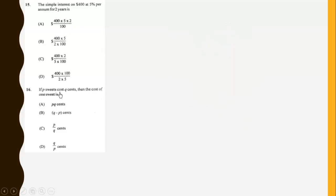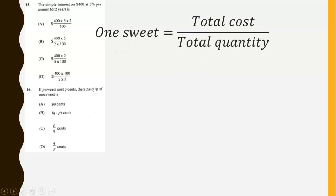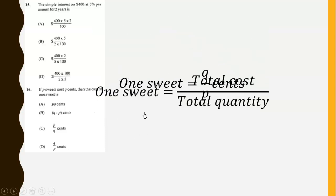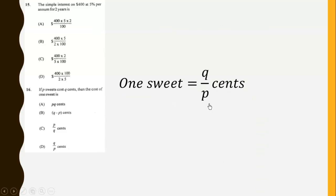If P switches cost Q cents, then the cost of one switch is the total cost divided by the total quantity, so that will be Q divided by P cents, which gives us answer D.